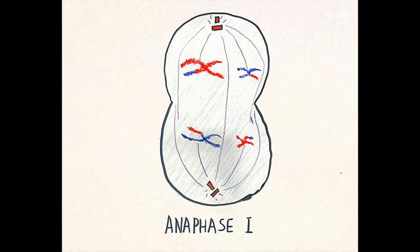While the centromeric cohesin remains untouched as it is protected by a protein called shugoshin. Shugoshin prevents the sister chromatids from separating, allowing them to stay together while homologues are separated from each other.